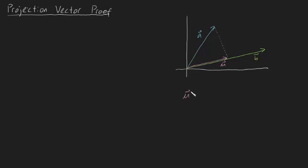But how do we find our vector U? Well, all we need to do is find two useful pieces of information. We need to find its length — in other words the magnitude of U — and we also need to find its direction — in other words the unit vector of U. And if we plug those two pieces of information together, we've found our projection.